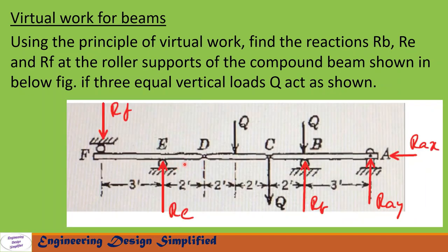In this problem, given is a compound beam with points A, B, C, D, E, F. At B, E, and F there are three roller supports, and at A it is hinged. At C and D also there are hinges. Three equal loads Q are acting: one at B, another one between D and C, and another one at point C, as shown in the figure. We need to find reactions at B, E, and F using the principle of virtual work.